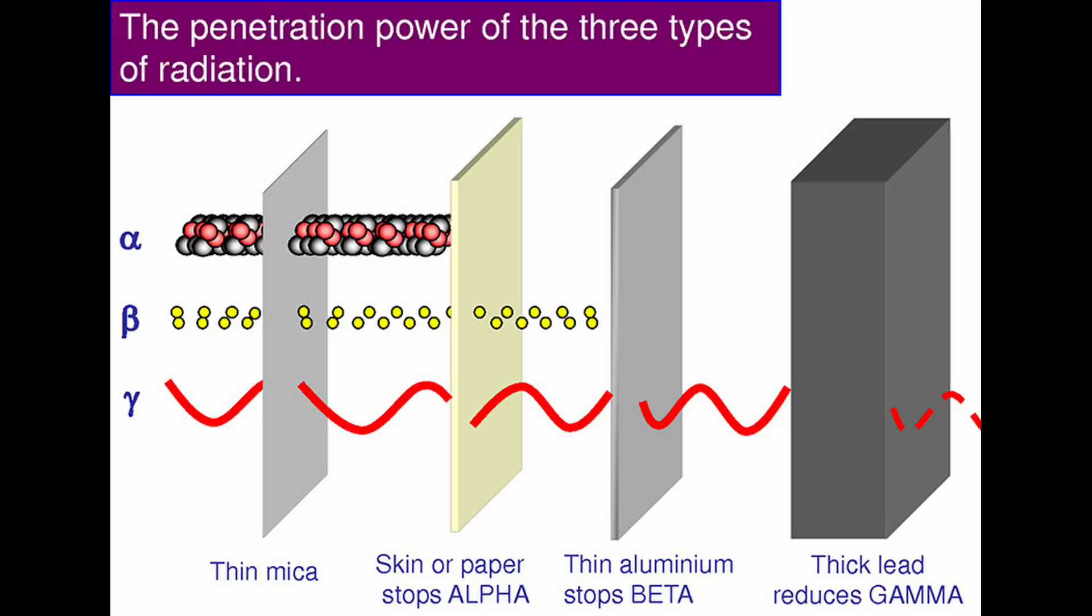Beta particles have a medium strength. They are not as penetrating as gamma, but not as weak as alpha. They are a high-energy, high-speed electron, or positron, emitted from the radioactive decay of an atomic nucleus. A sheet of aluminum can stop beta particles.